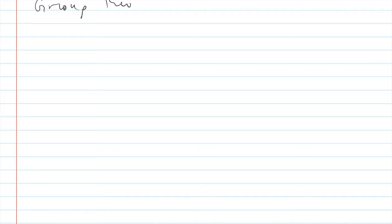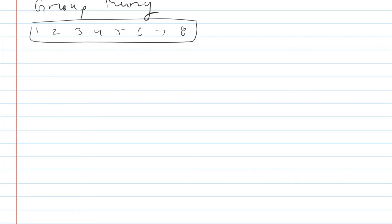The type of math used with puzzles like this is known as group theory. For our purposes, let's use a simpler puzzle: instead of 16 squares arranged in a grid, what if there are only eight squares arranged in a row next to each other?